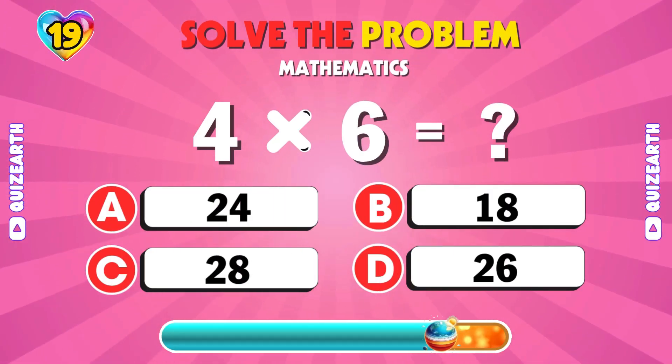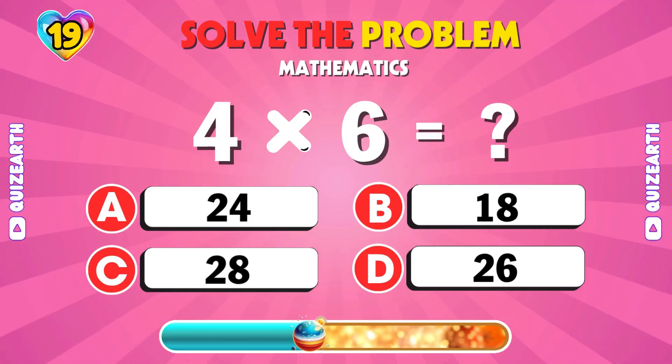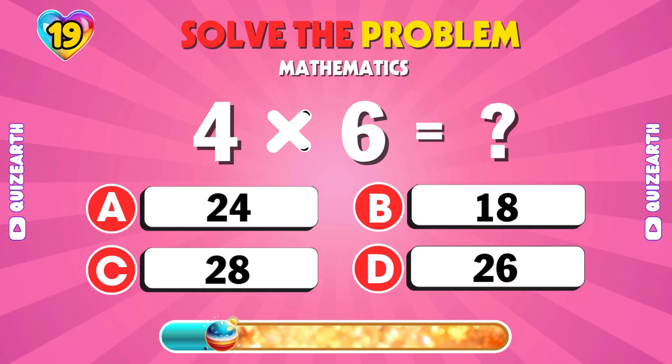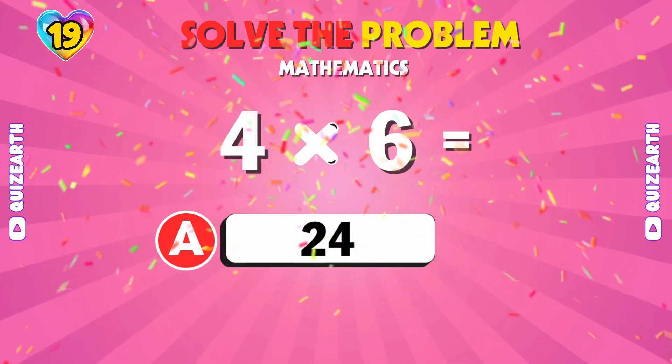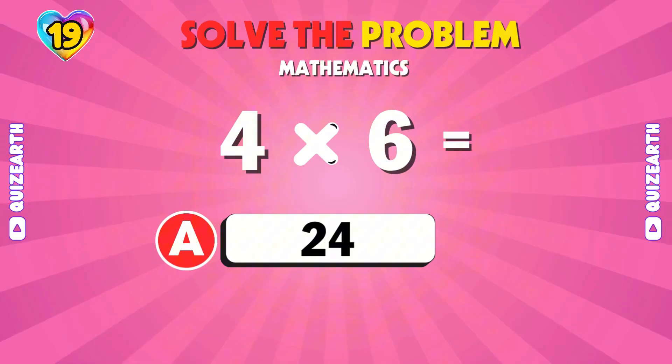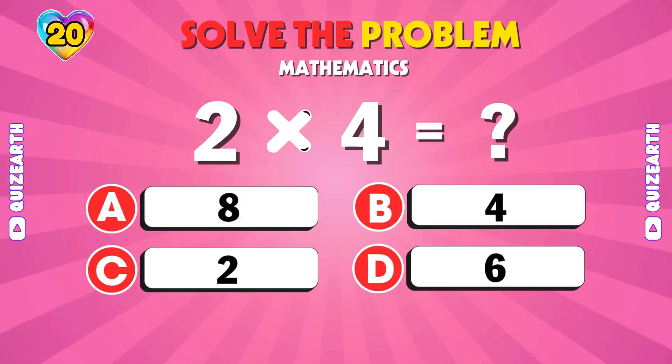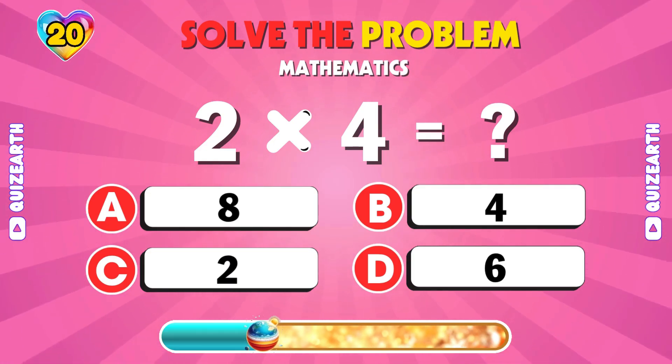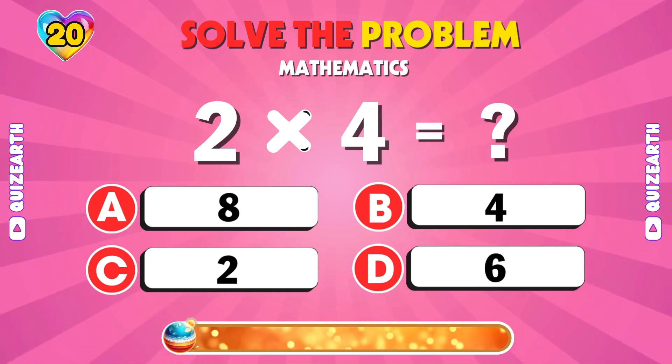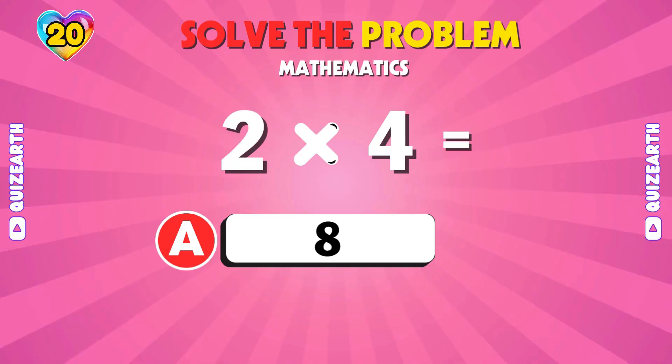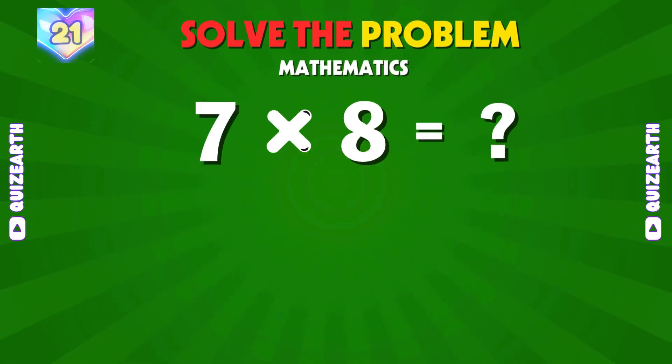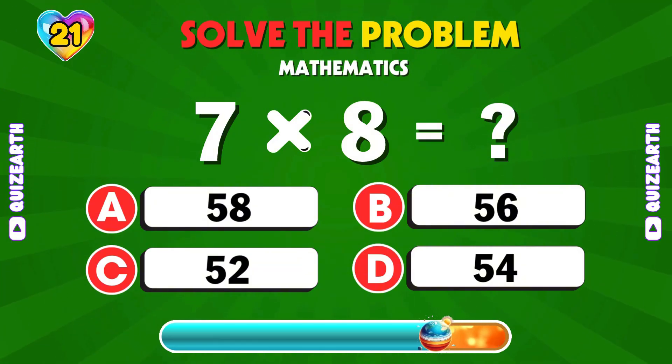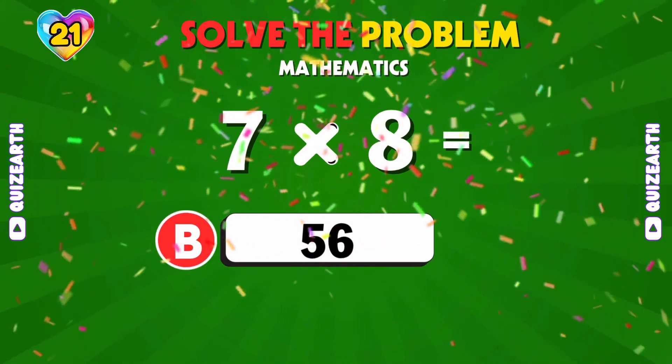Alright now, 4 times 6? 24. Try this, 2 times 4. Easy, right? 8. What's 7 times 8? 56.